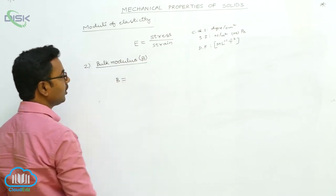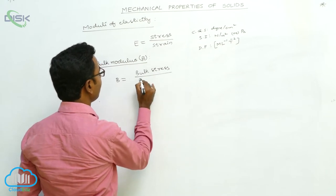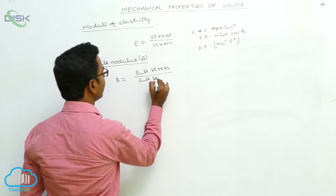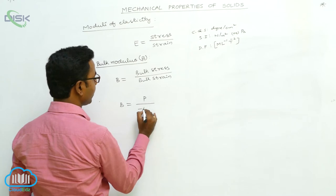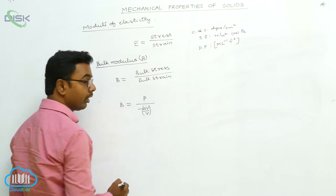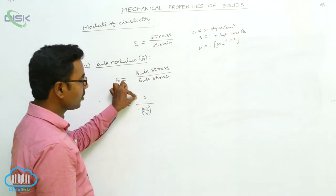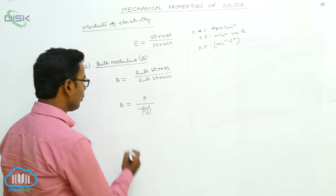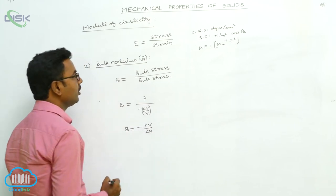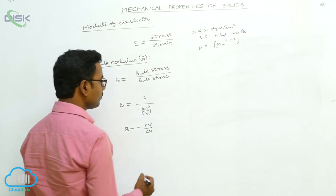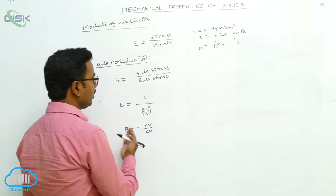The second modulus is Bulk Modulus, defined as the ratio of bulk stress to bulk strain. B = -PV/ΔV. The negative sign indicates that by increase of pressure, volume will decrease — if pressure is positive, change in volume is negative. The units and dimensions of Bulk Modulus are again the same as those of stress.